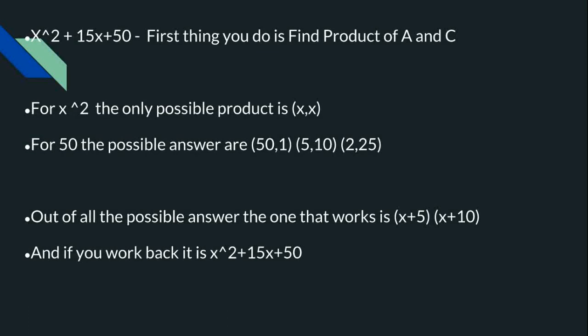For x² + 15x + 50, the only possible thing for x² is x times x. For 50 the possible answers are 50 and 1, 5 and 10, and 2 and 25. Out of all the possible outcomes the one that works is (x + 5)(x + 10). And if you work back you will get x² + 15x + 50, and that was what we started off with.